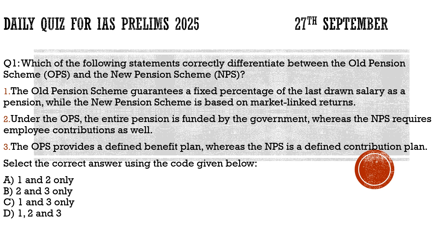Hello and welcome back to another episode of daily quiz for IAS prelims 2025. It is 27th September and in this video we are going to discuss three types of questions for your prelims preparation. Every day we discuss three types of questions. The first set is from current affairs — we take the most important articles from newspapers, break them down into the simplest language possible, and derive prelims-based questions from those articles.